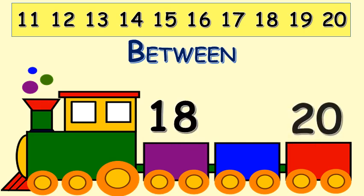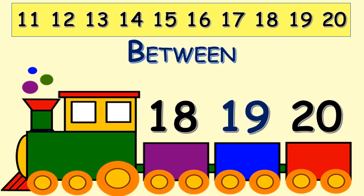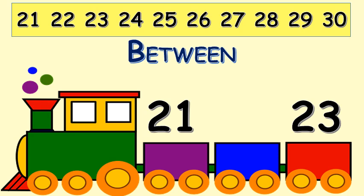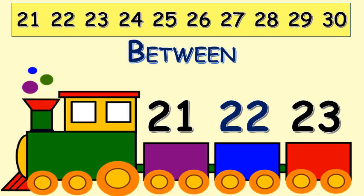Here we have two numbers, eighteen and twenty. Now you have to find which number comes in between eighteen and twenty. Yes, it's number nineteen that comes between eighteen and twenty. Here we have two numbers, twenty-one and twenty-three. Can you find which number comes between twenty-one and twenty-three? Yes, it's twenty-two that comes in between twenty-one and twenty-three.